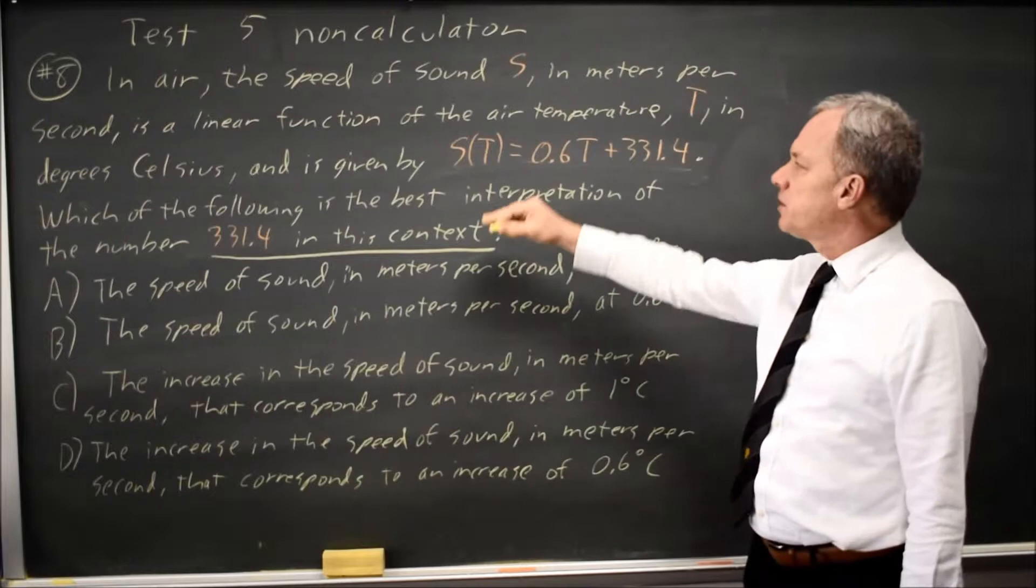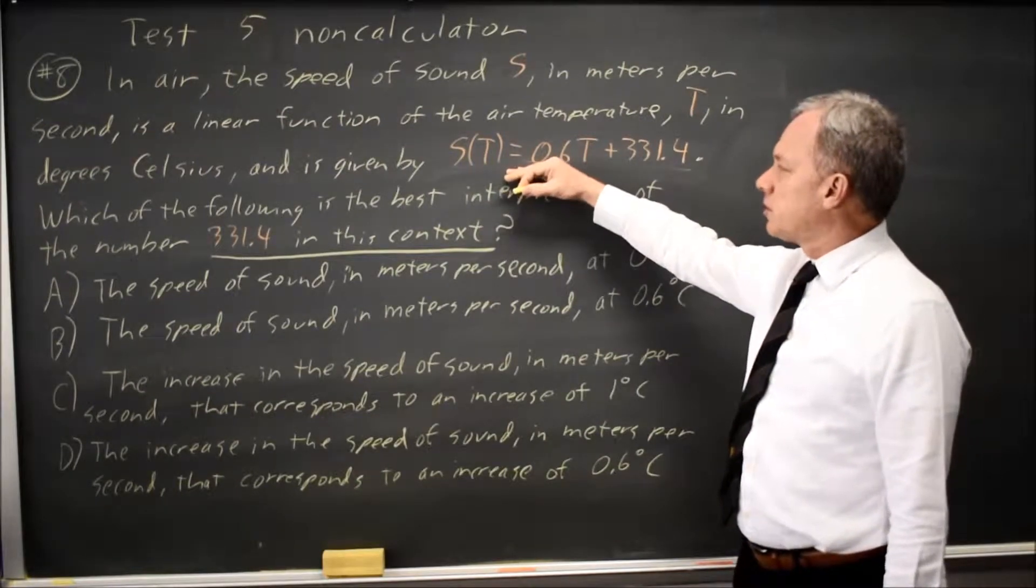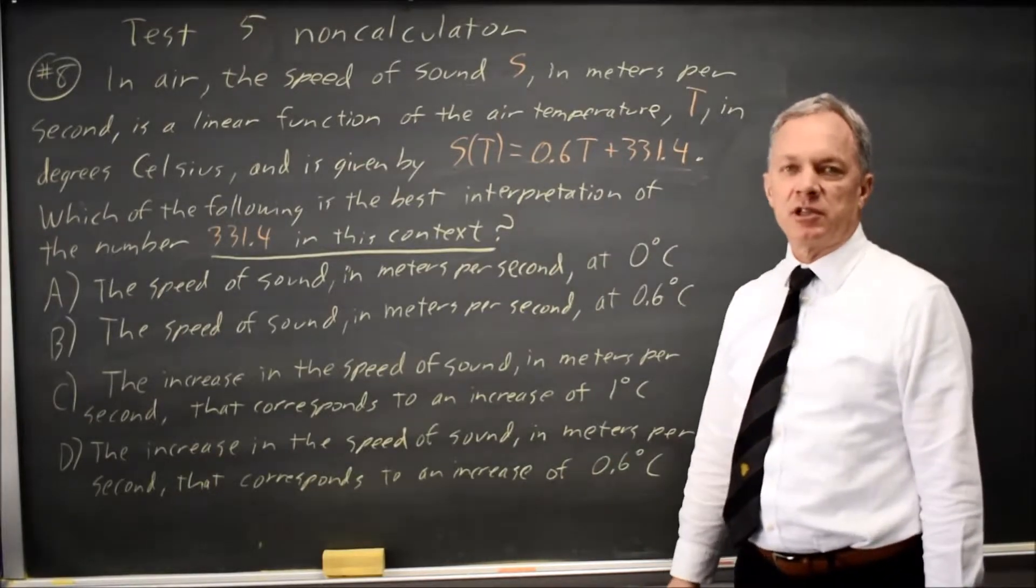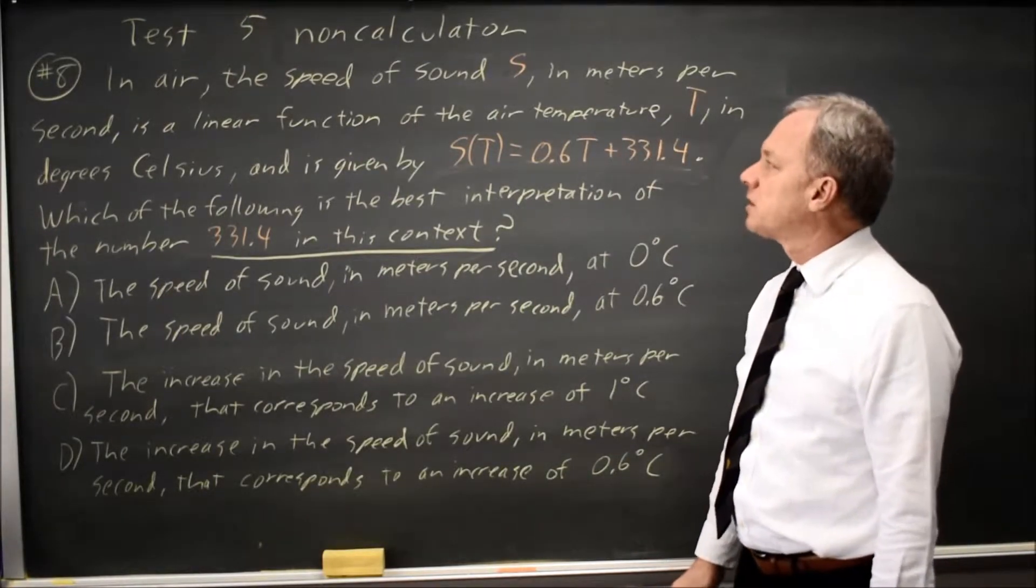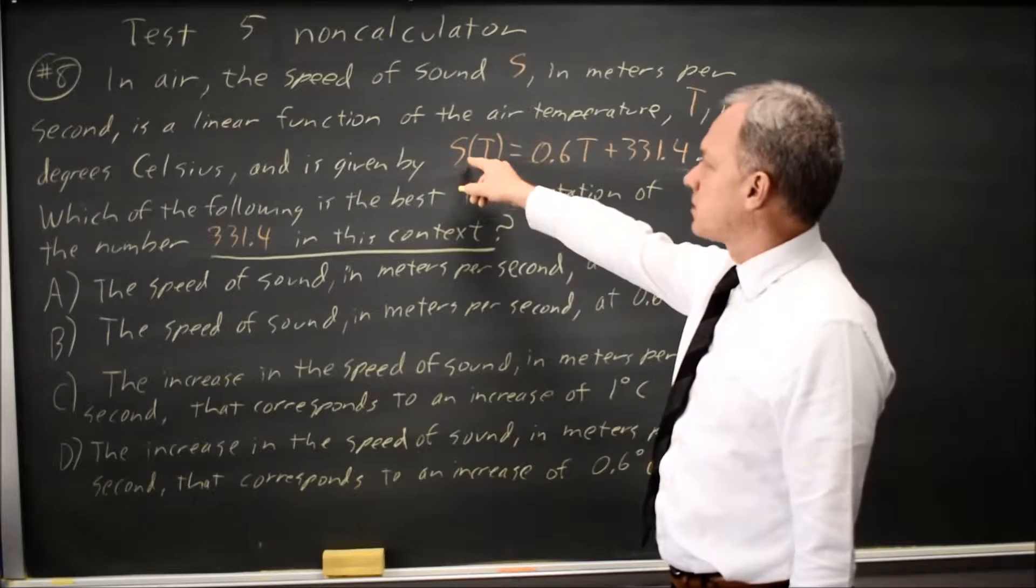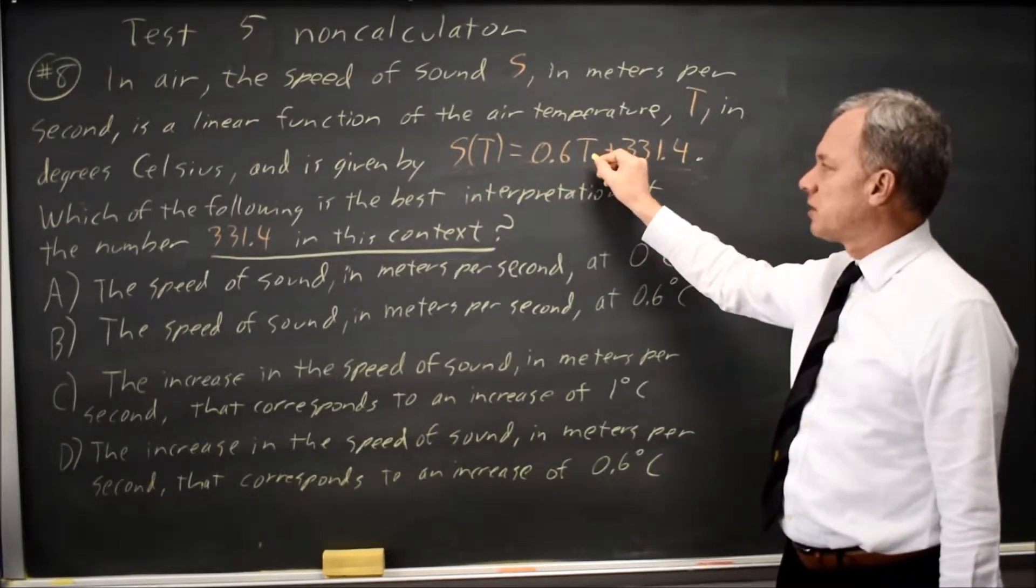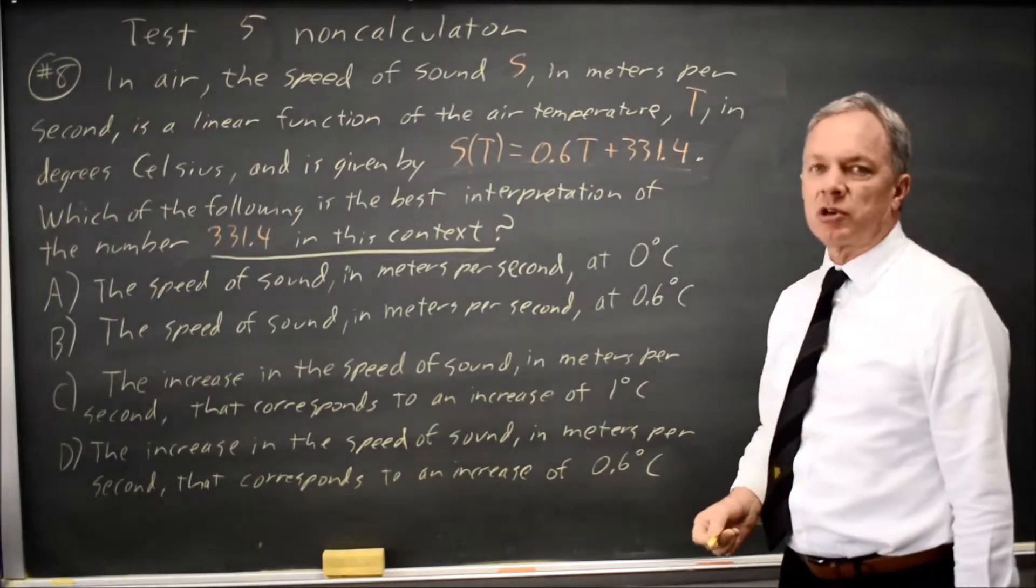In our linear expression, the slope is 0.6, the intercept is 331.4, so they're asking for the meaning of the intercept in context. Here, S of T is the speed of sound at temperature T, and that is equal to 0.6 times the temperature plus 331.4.